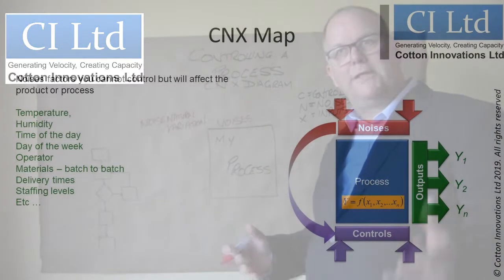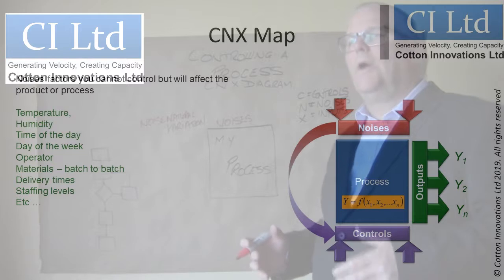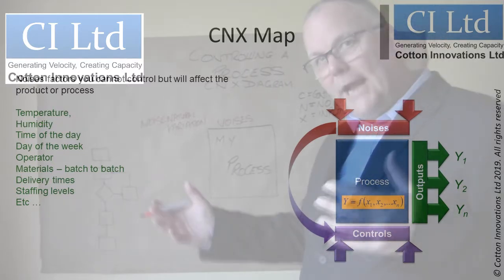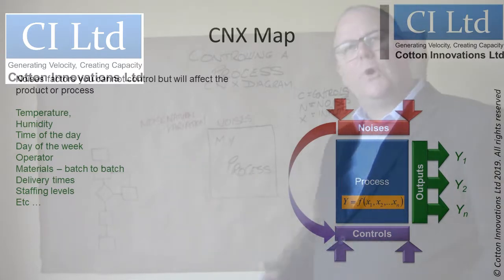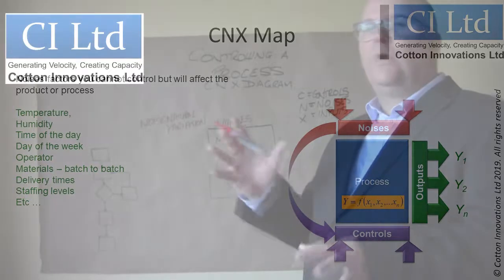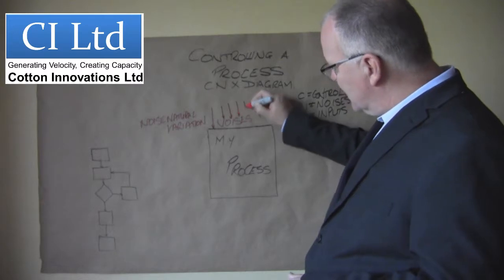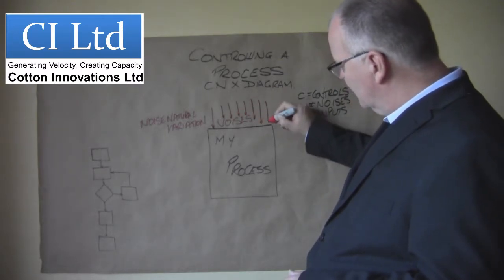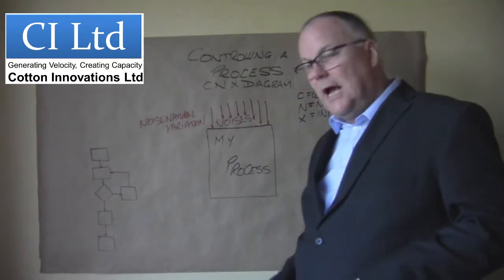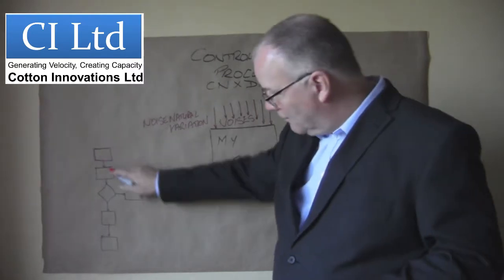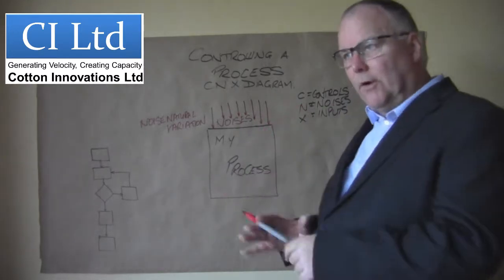What do we mean by that? The wind, the temperature, the humidity, the day of the week, operator to operator variation — whether the operator is male or female, whether they're tall or small, whether they're left-handed or right-handed, whether it's batch one or batch two, whether it's supplier one or supplier two. All of these are noises which will affect the process, and so we need to map every one of those noises.